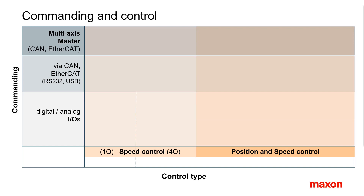Position controllers can usually also be set up as speed controllers. Torque control on motors is equivalent to current control — it is the lowest control level. A controller with a torque control mode may be used as an inner loop in an external speed or position control loop.